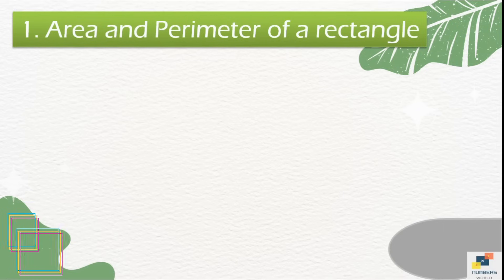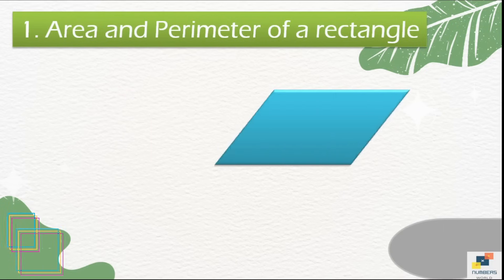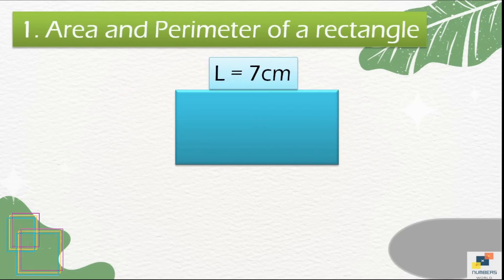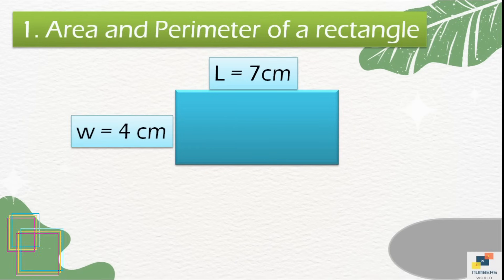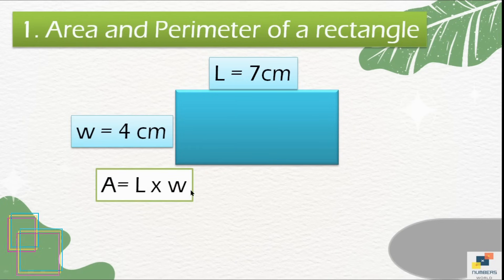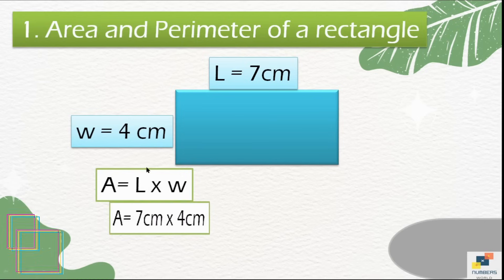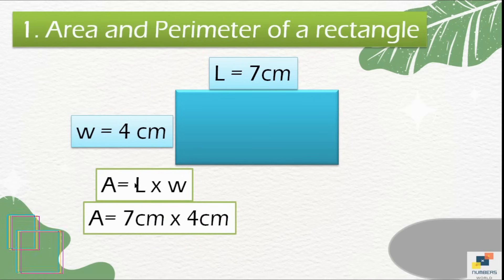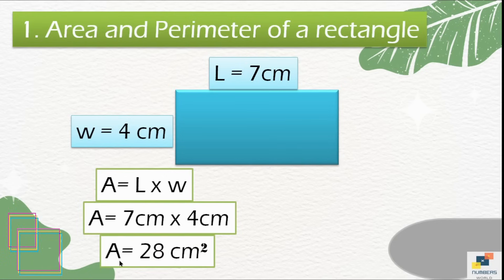Let's discuss the first type of question: area and perimeter of a rectangle when length and width are both given. Write the formula first — area is equal to length multiplied by width. Put in the value of length, which is 7 centimeters, and width, which is 4 centimeters. Multiply them and the answer is 28 centimeters squared.